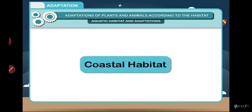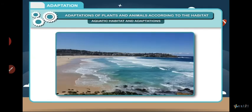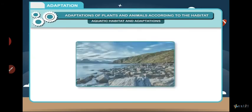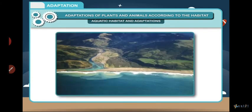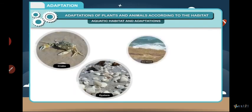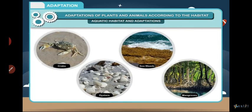Coastal habitat is the region where the sea meets the land. A variety of coastal habitats support different types of living organisms. Estuaries are areas where rivers and streams containing fresh water meet the sea, which contains salty water. This unique area is supported by crabs, oysters, seaweeds, and mangroves.